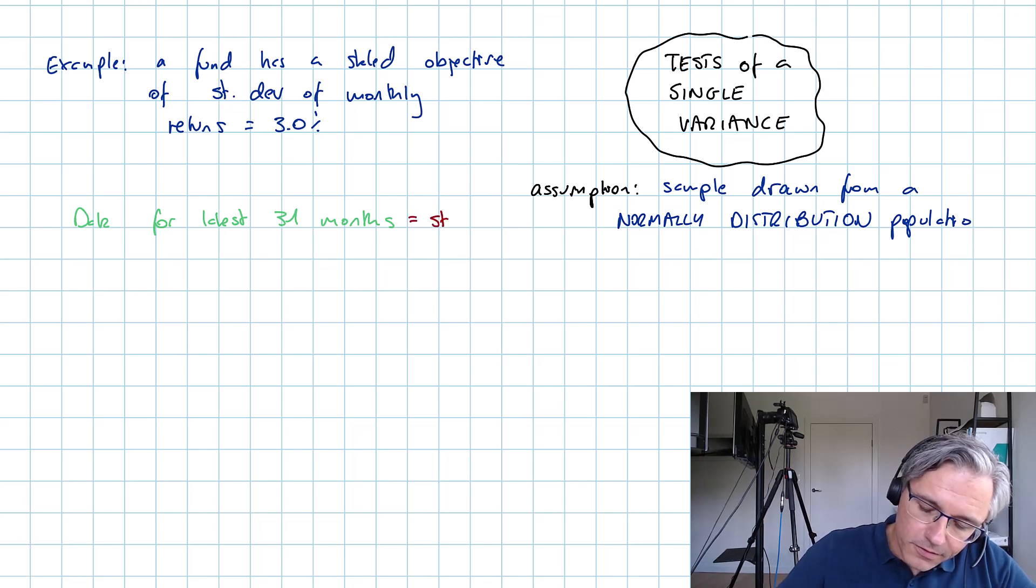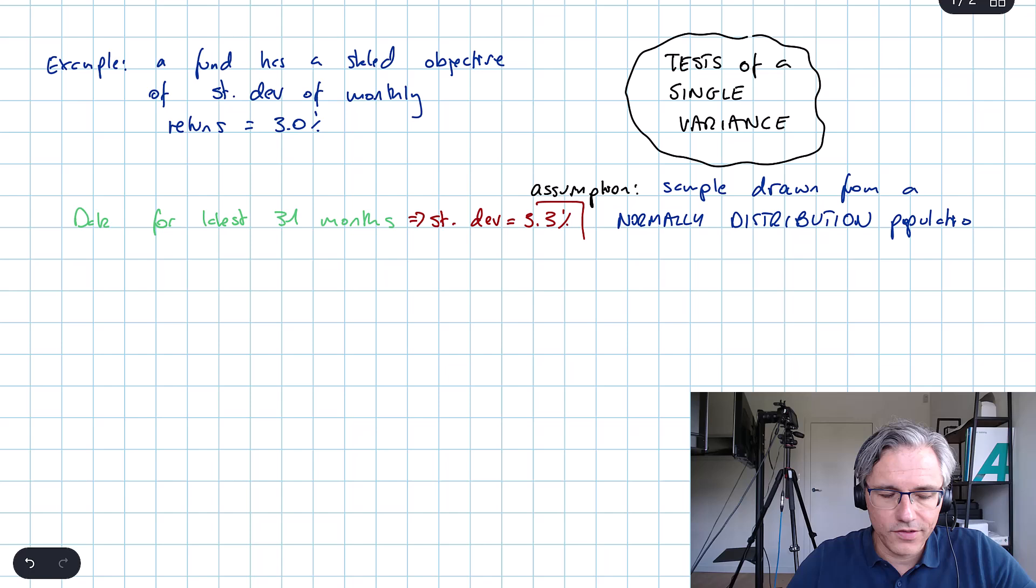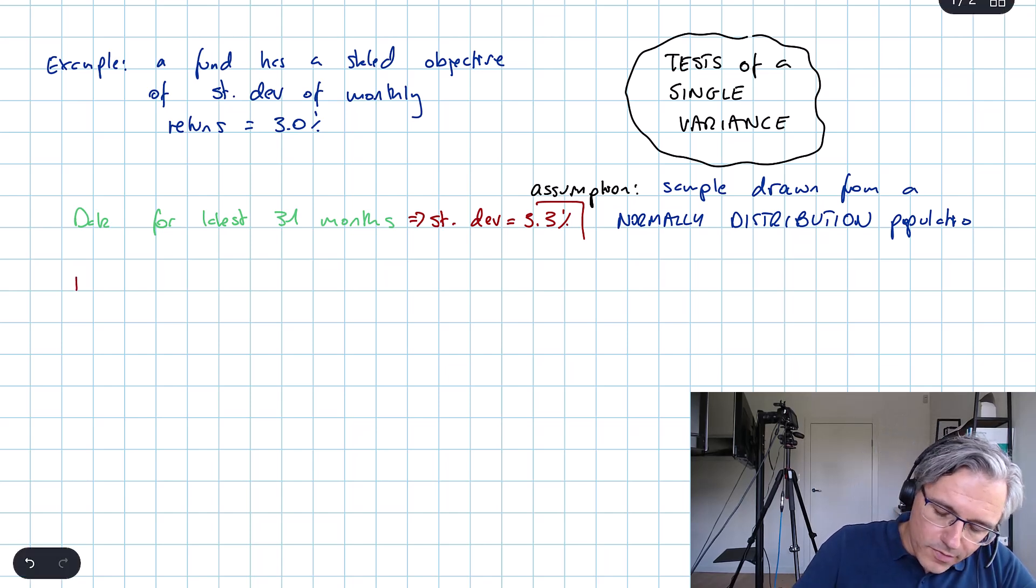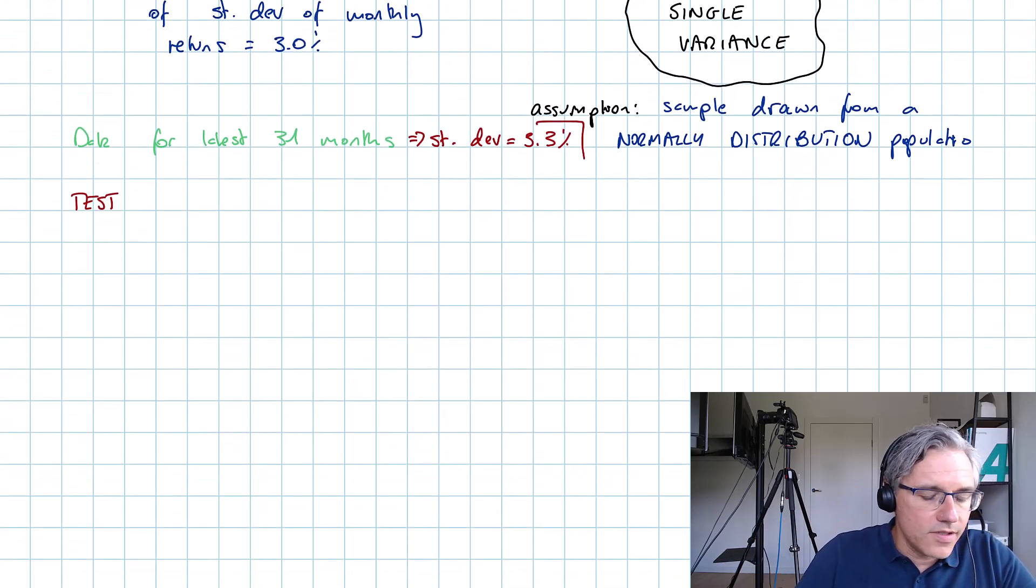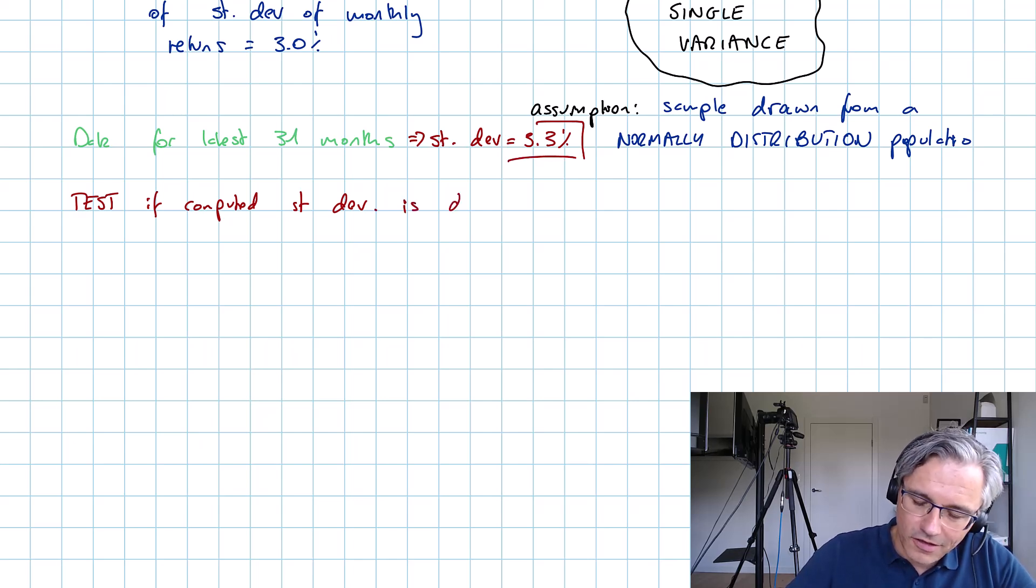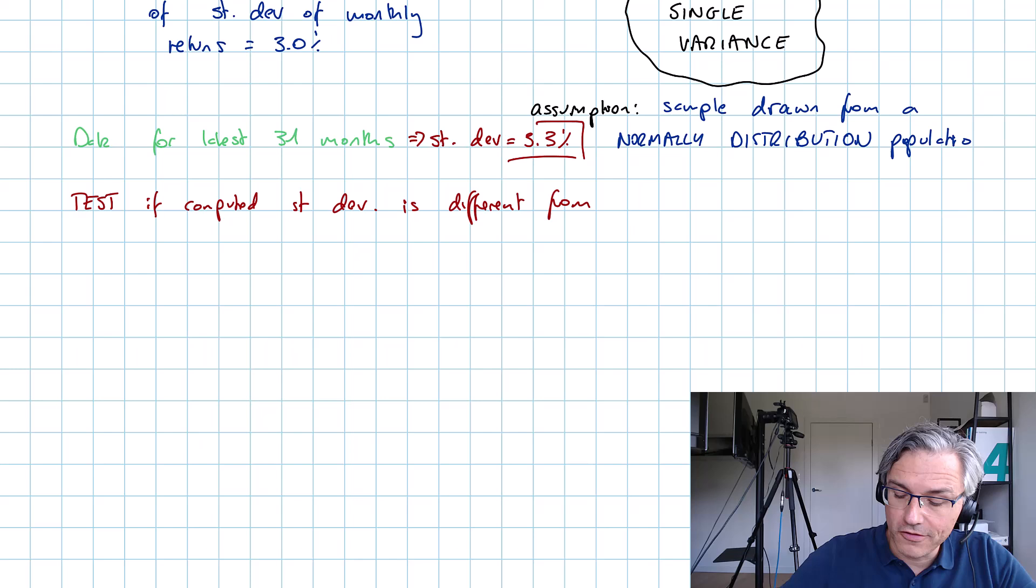Data has been compiled for the latest 31 months. I'm using 31 just to make data accessibility easier when we look up the critical values in the relevant table. It has revealed that for that 31-month period, the standard deviation of the monthly returns is in fact 3.3 percent.